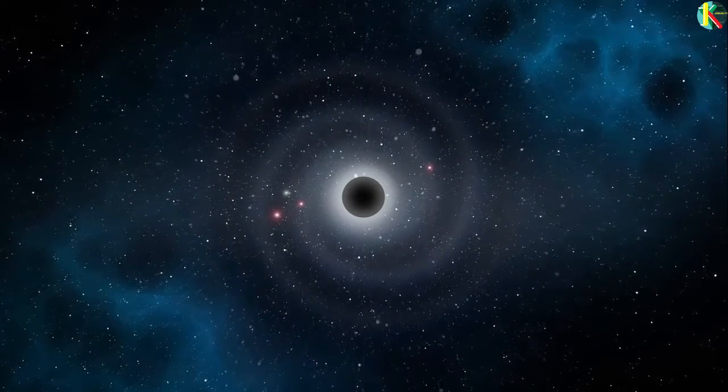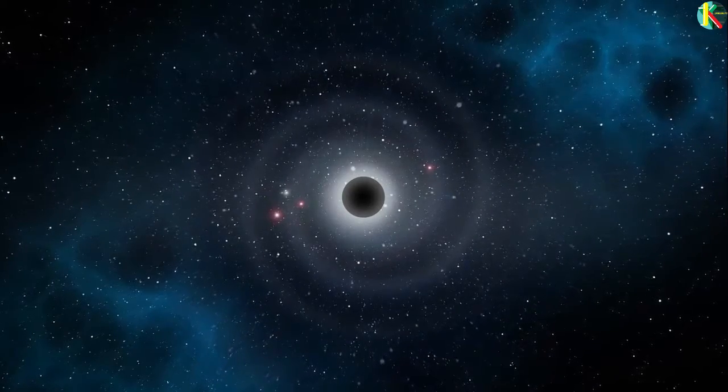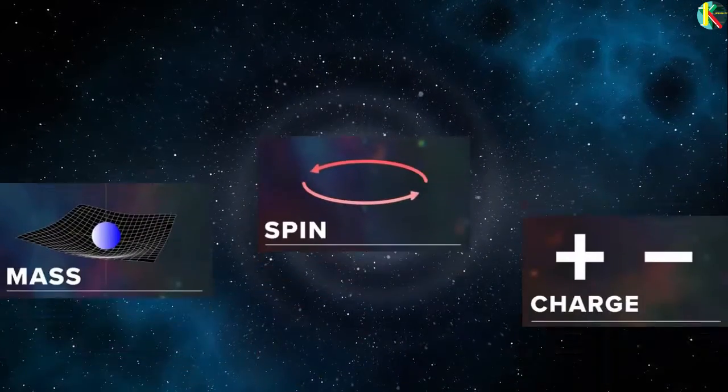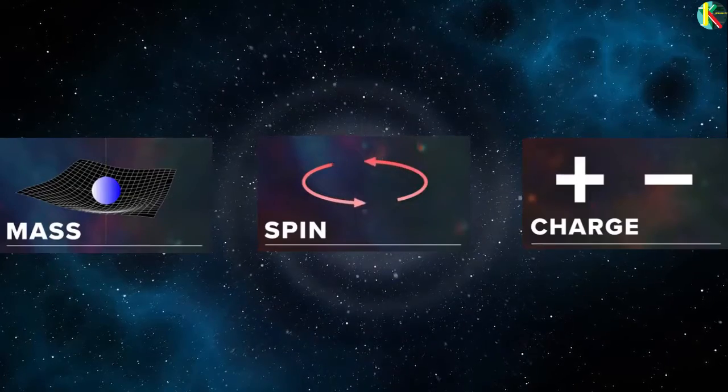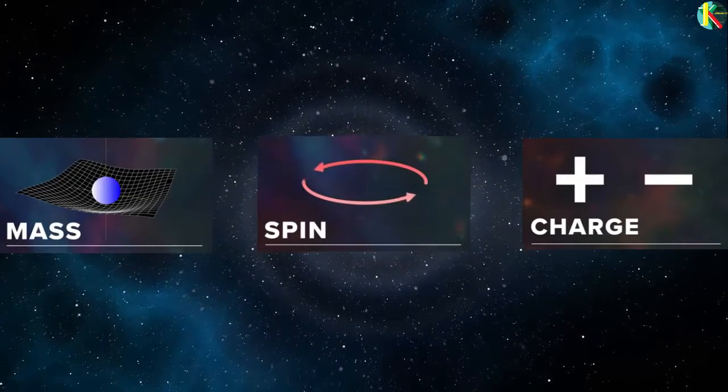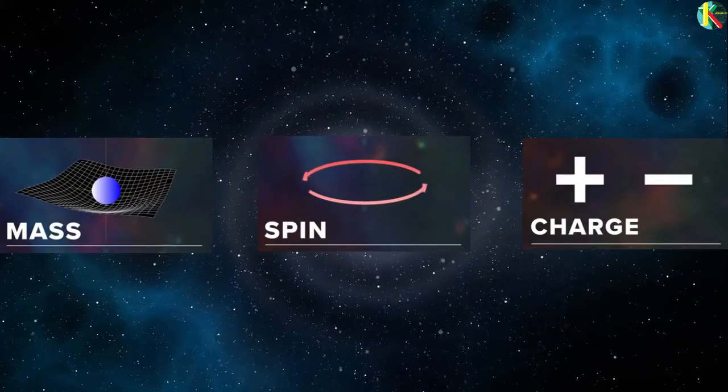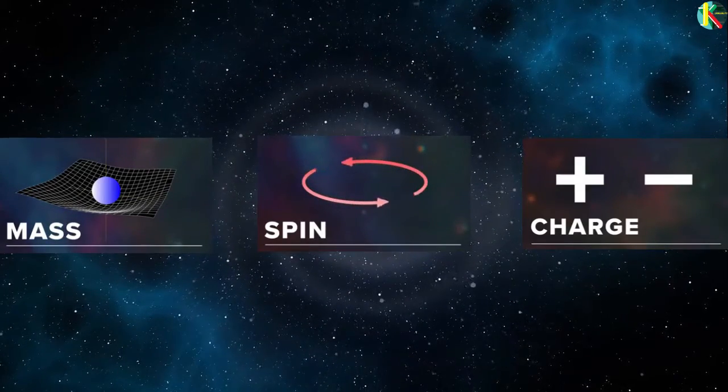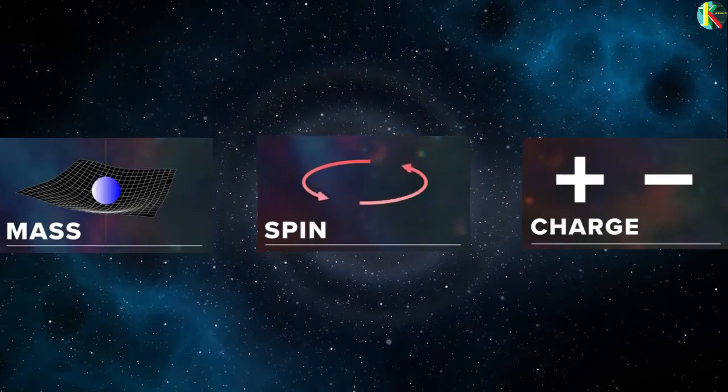From the point of view of the outside universe, black holes can only have three properties: mass, spin and electric charge. This is the so-called no-hair theorem and it suggests that most of the information about anything that falls into a black hole is lost to the outside universe.